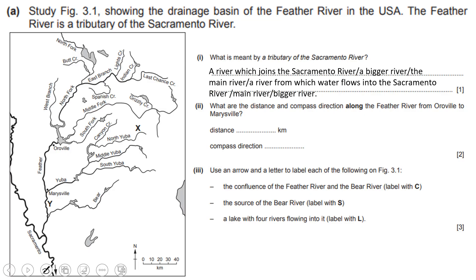The Feather River is a tributary of the Sacramento River. What is meant by a tributary of the Sacramento River? It means a river that joins the Sacramento River — a tributary is a smaller river joining the larger one. So this is the Feather River joining the Sacramento River.